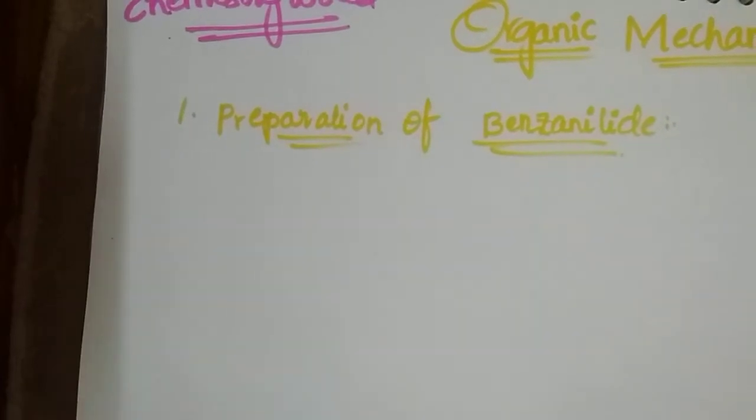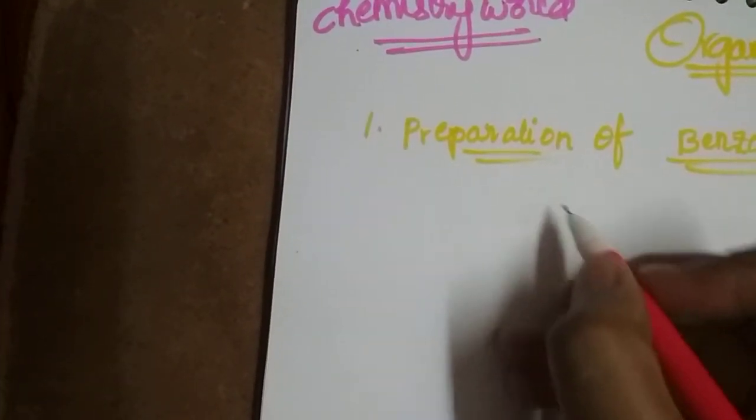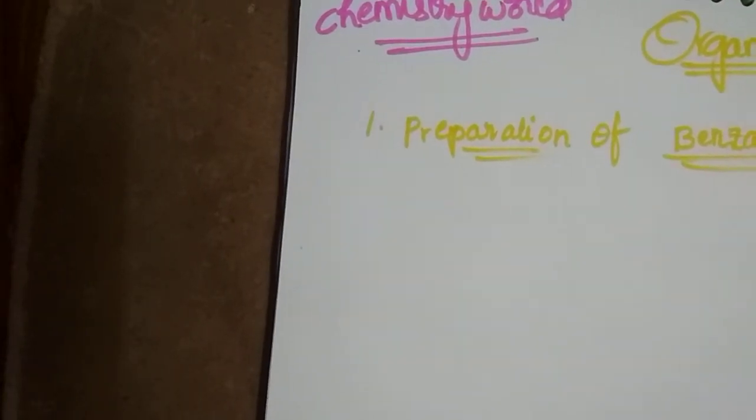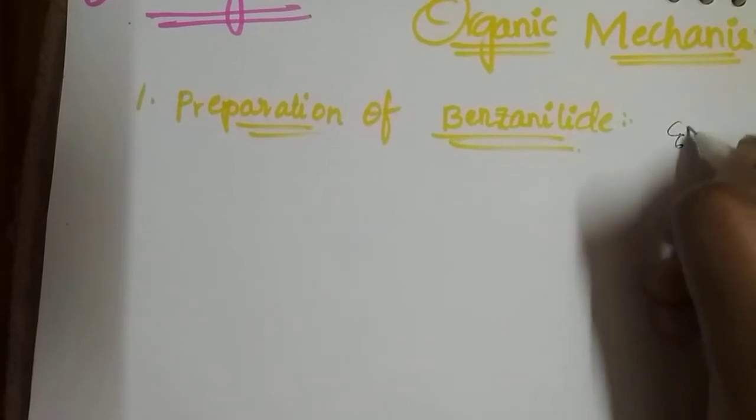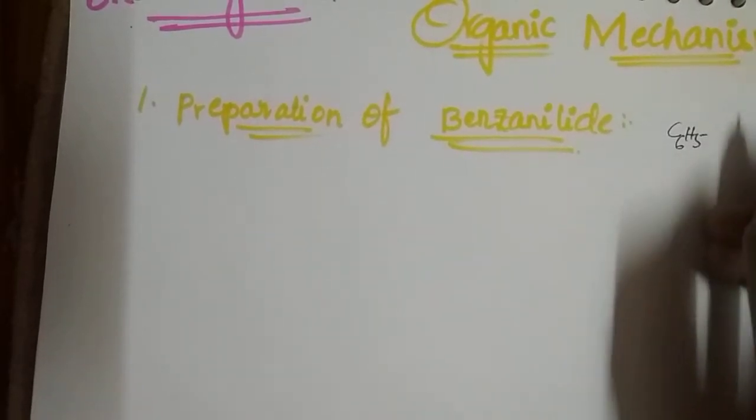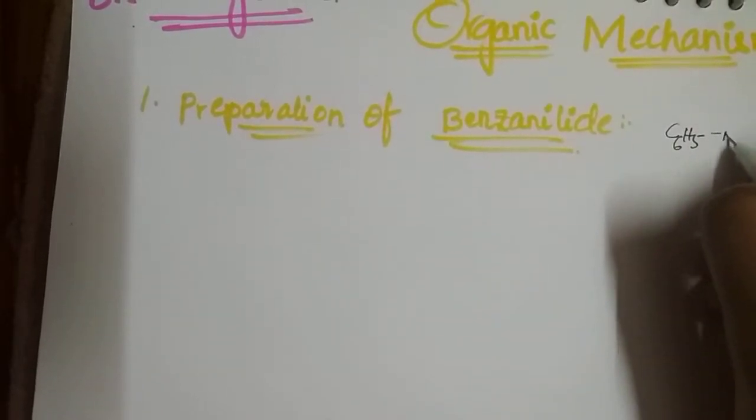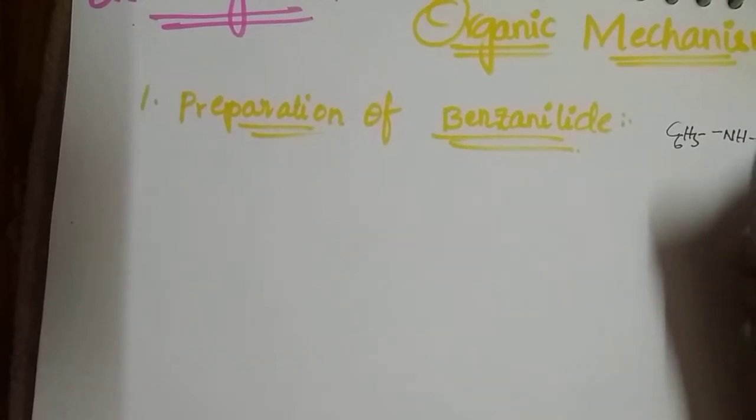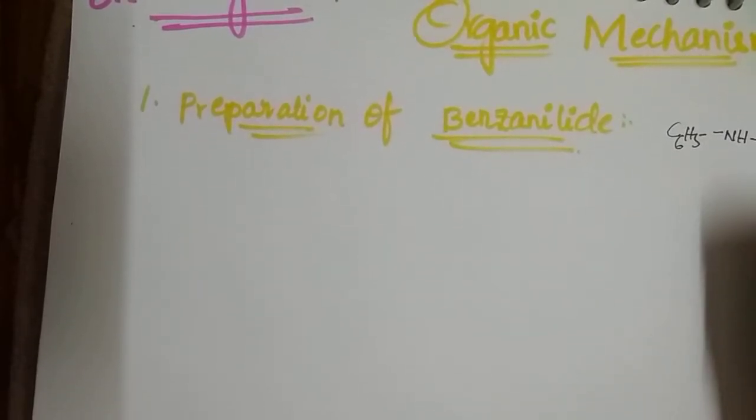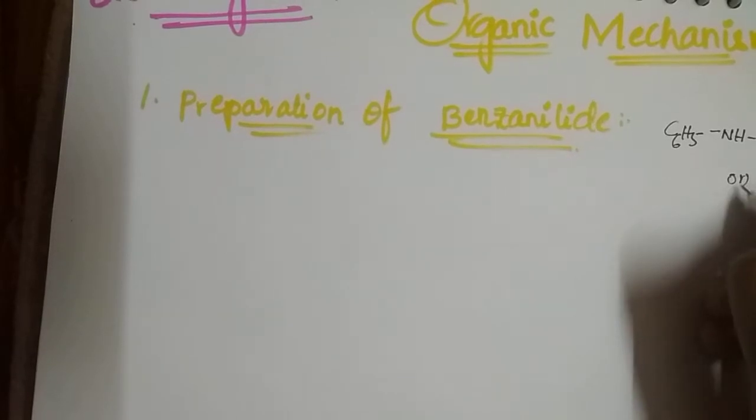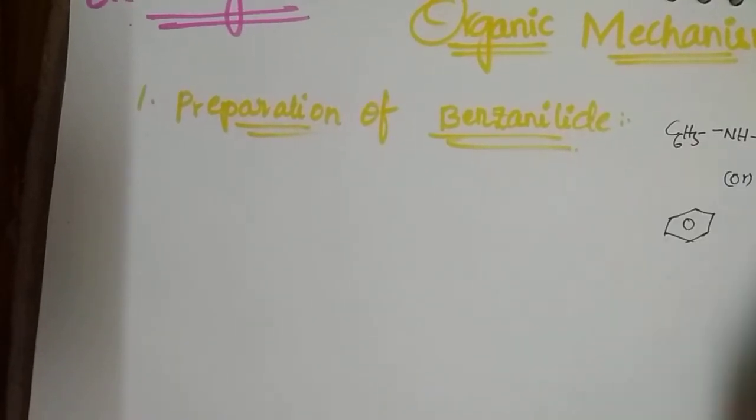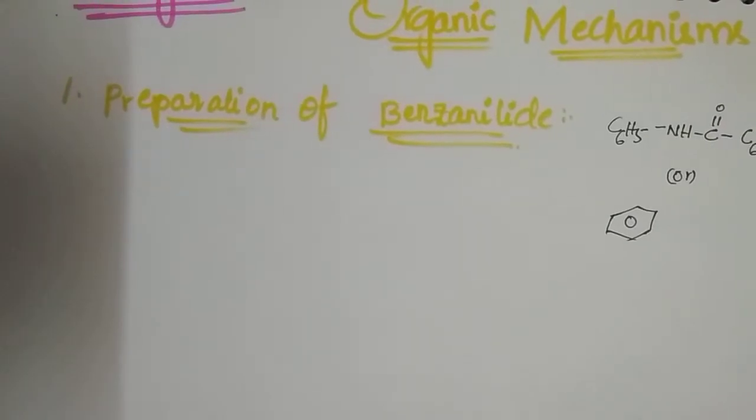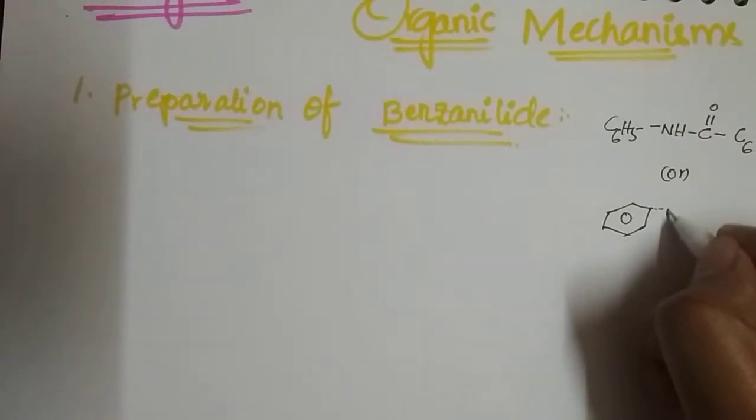First of all, it is also known as Benzionylite structure. We have to learn C6H5 and H-C double bond O-C6H5. It is also written as C6H5, also written as phenyl, and H-C double bond O phenyl ring.